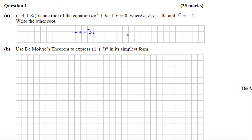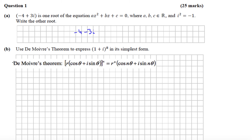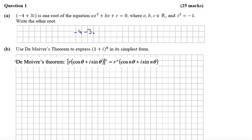De Moivre's Theorem can be found in the tables book. With De Moivre's Theorem, we need to express the complex number in polar form first, and then apply De Moivre's Theorem to simplify it.